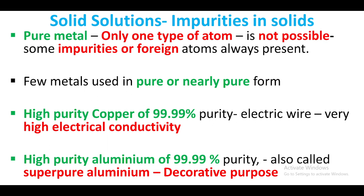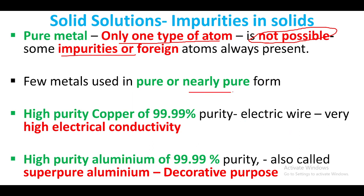What is meant by solid solution? Generally, a material is nearly pure metal — not completely pure, as only one type of atom is not possible. Some impurities or foreign atoms are present. For example, high purity copper has 99.99% purity.